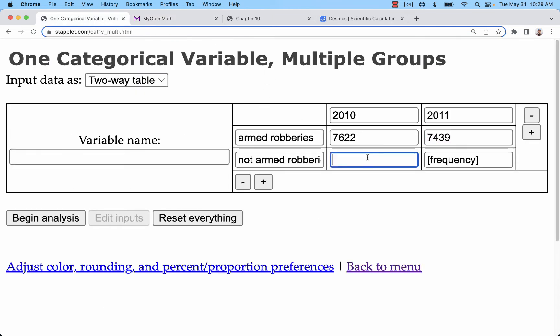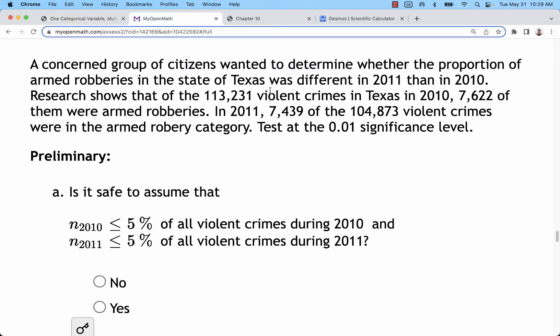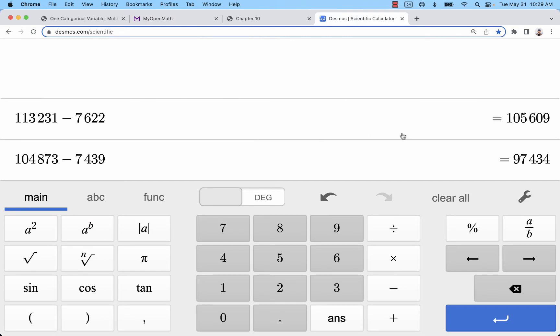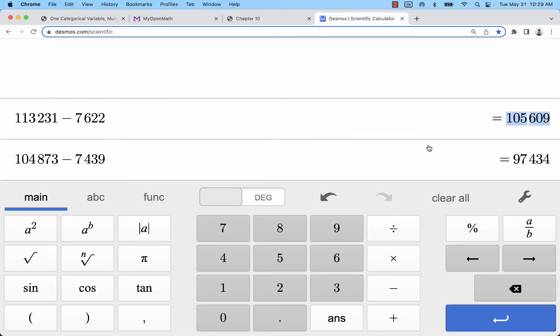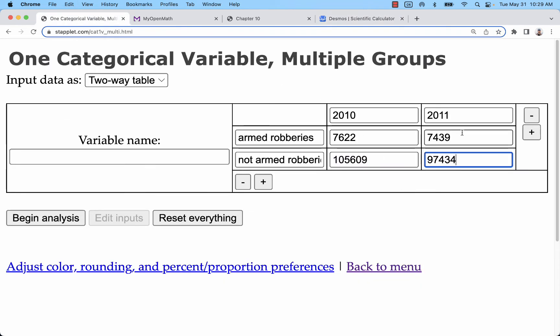We need to know how many were not armed robberies. Of all those violent crimes, how many were not armed robberies? What you need to do is take the total number of violent crimes minus the number of armed robberies. I've done that for both groups over here in Desmos. These are the number of violent crimes that are not armed robberies for 2010 and 2011.